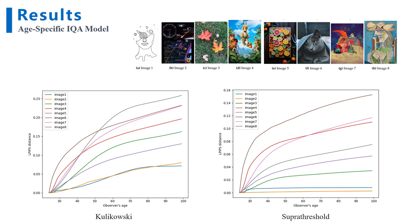Now, let's see the results of our age-specific IQA model, which is a combination of vision simulation and the LPIPS metric. We randomly select eight images as input and calculate the output of our model on the age range from 24 to 99. The result is as anticipated — the LPIPS distance increases when the age value increases, which means the perceived image quality decreases. Both the Kulikovsky model and the supra-threshold model show the same trend, except the supra-threshold model has lower LPIPS distance values.